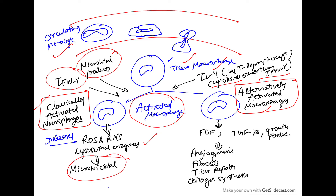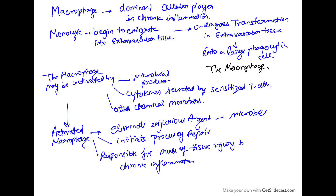Alternatively activated macrophages release growth factors such as TGF-beta and FGF, so they are involved in angiogenesis, fibrosis, tissue repair, and collagen synthesis. We should remember that the macrophage is the dominant cellular player in chronic inflammation. Monocytes begin to immigrate into the extravascular tissue and undergo transformation into macrophages there.